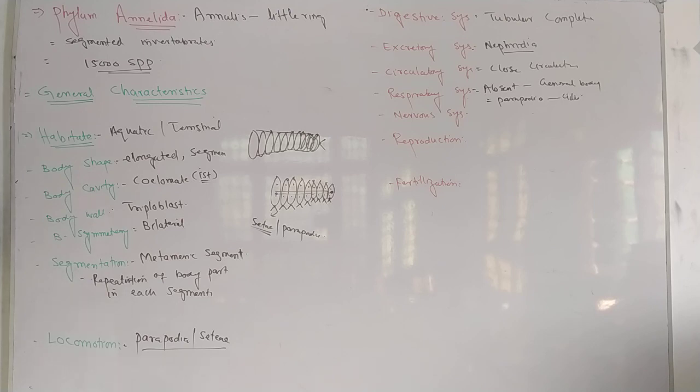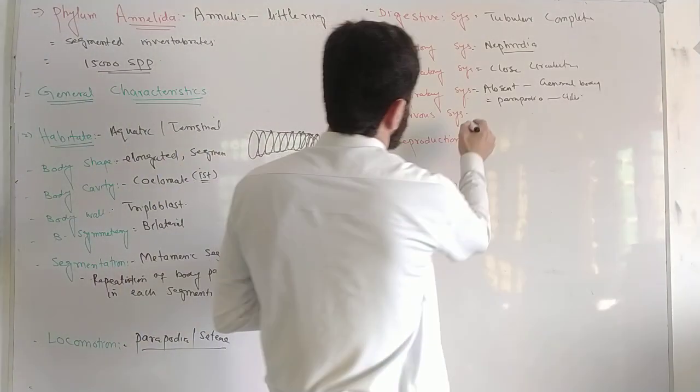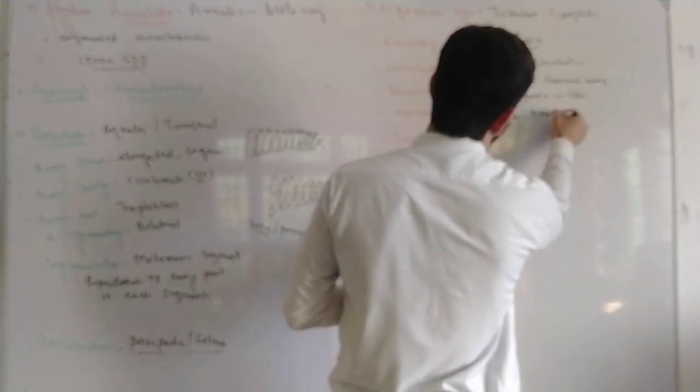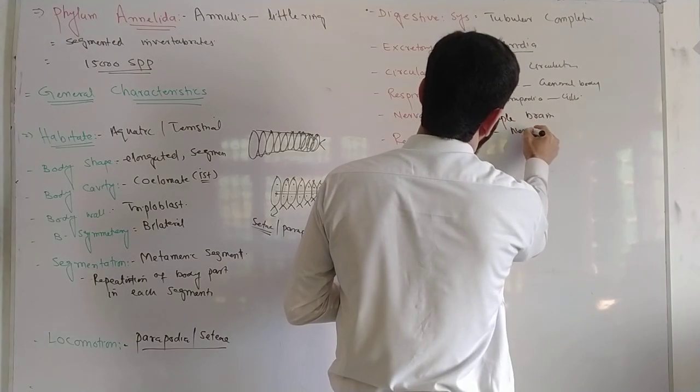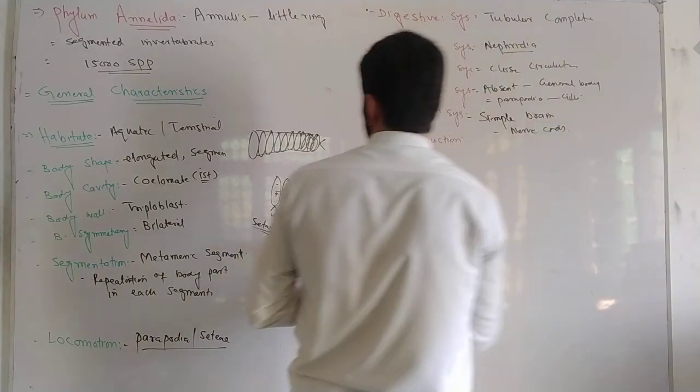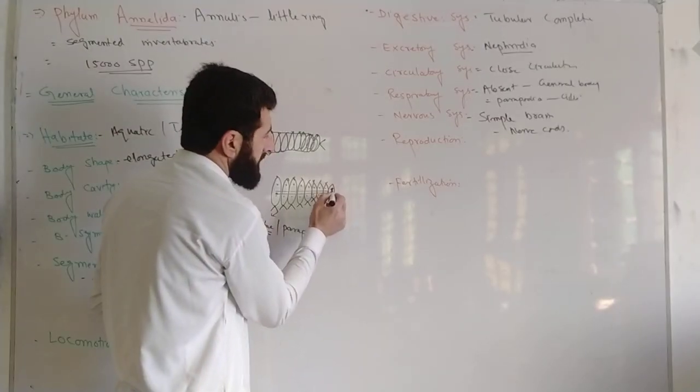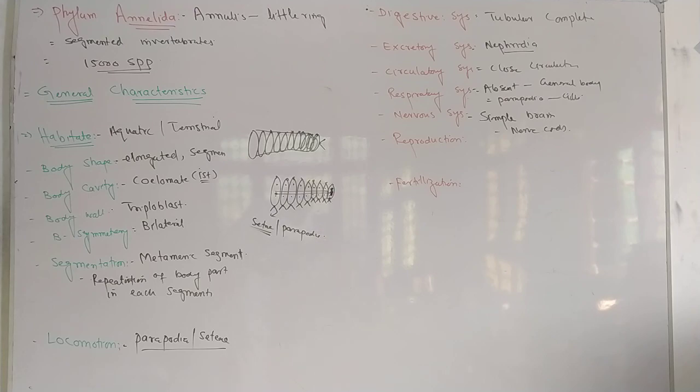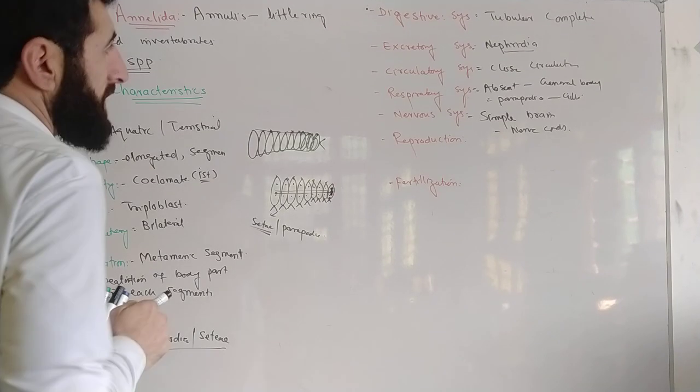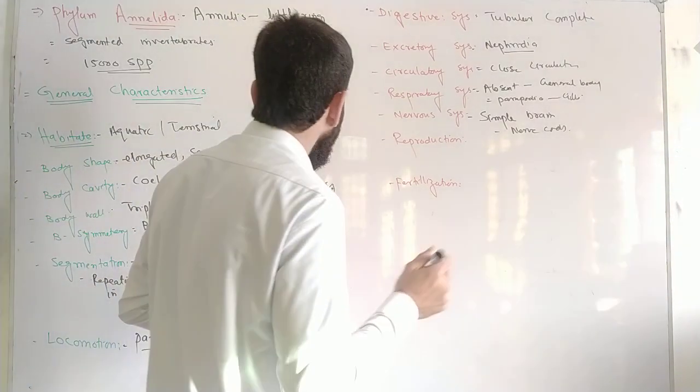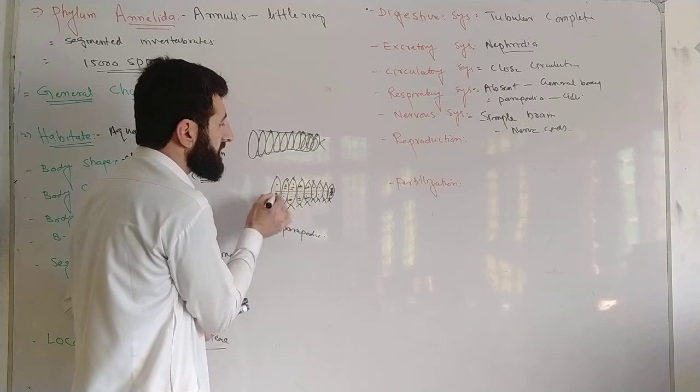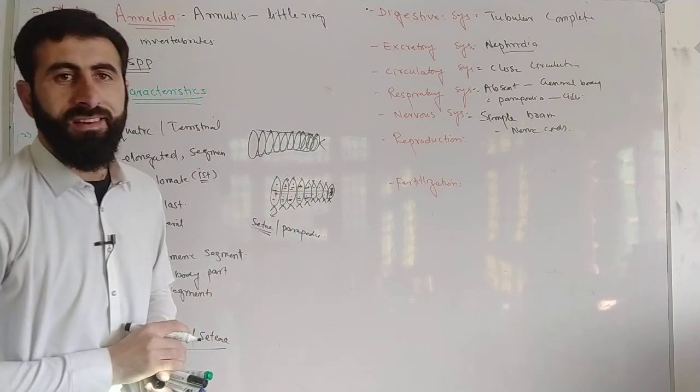In the nervous system, they contain simple brain. A simple brain is present here. Simple brain is present, and nerve cords are repeated in each segment. Each segment has nerve cords repeated.